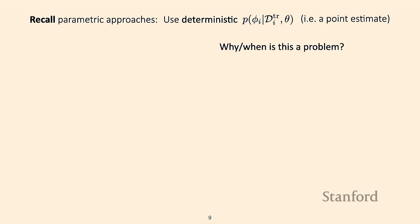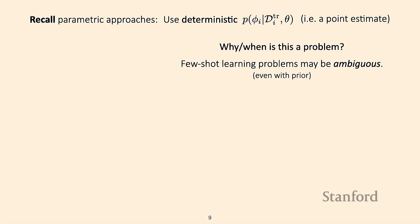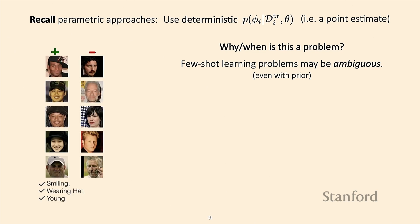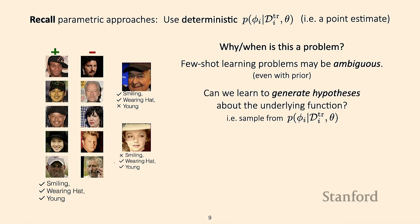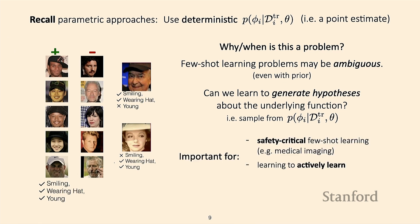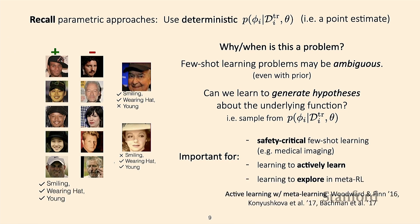This is an example from Monday where future learning problems might be ambiguous — you might have a support set where it's inherently unclear which attributes you should pay attention to. If we can learn to generate hypotheses about the underlying function, this can tell us if we need more labels or if we should abstain from making a prediction because it's uncertain. This is important in safety-critical settings, active learning settings, and exploration settings. In this lecture, we'll talk about algorithms that can handle this setting and generate multiple classifiers — one paying attention to smiling, one to wearing a hat, and one to the young versus old attribute.